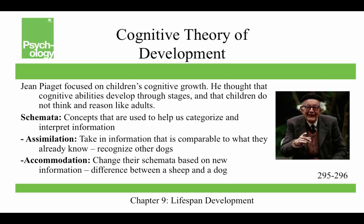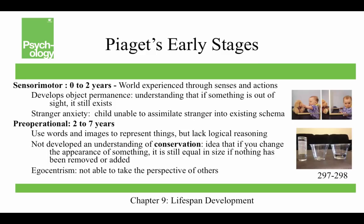By the time you're an adult, you have a schema for just about everything. In Piaget's sensorimotor stage, birth to two years, the world is experienced through senses and actions. Children develop object permanence — the understanding that if something is out of sight, it still exists. Magic is very easy to do with children who lack object permanence. Stranger anxiety occurs when a child is unable to assimilate a stranger into an existing schema, basically a fear of unfamiliar people.